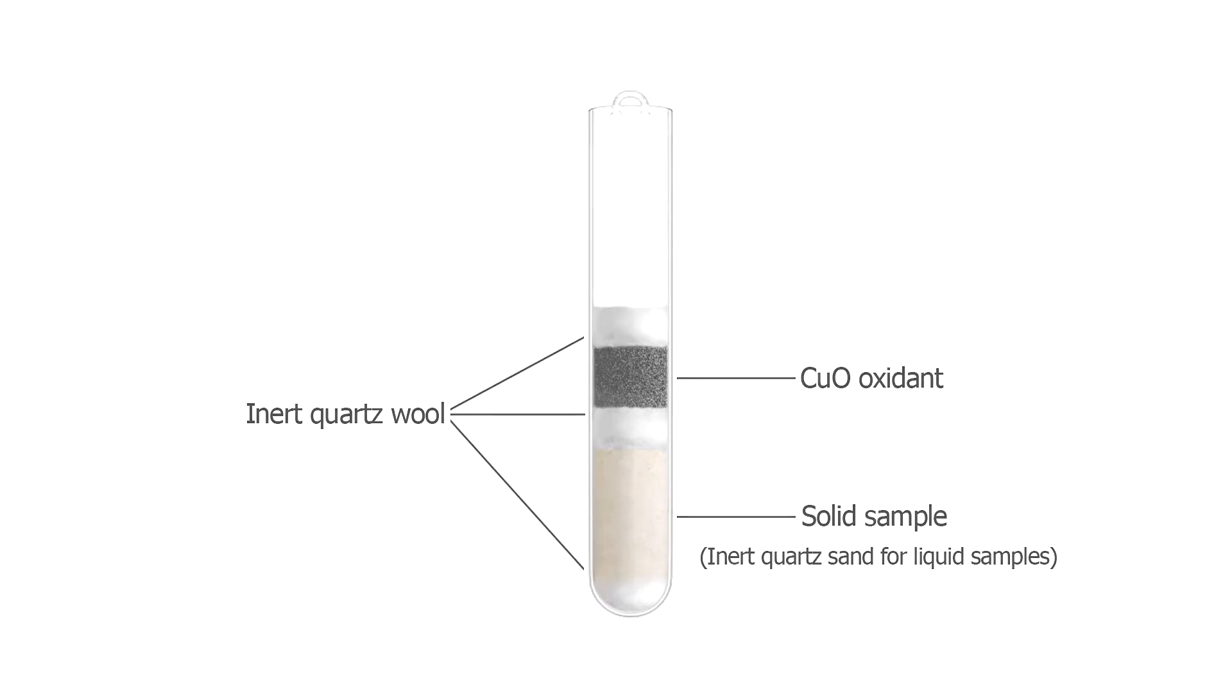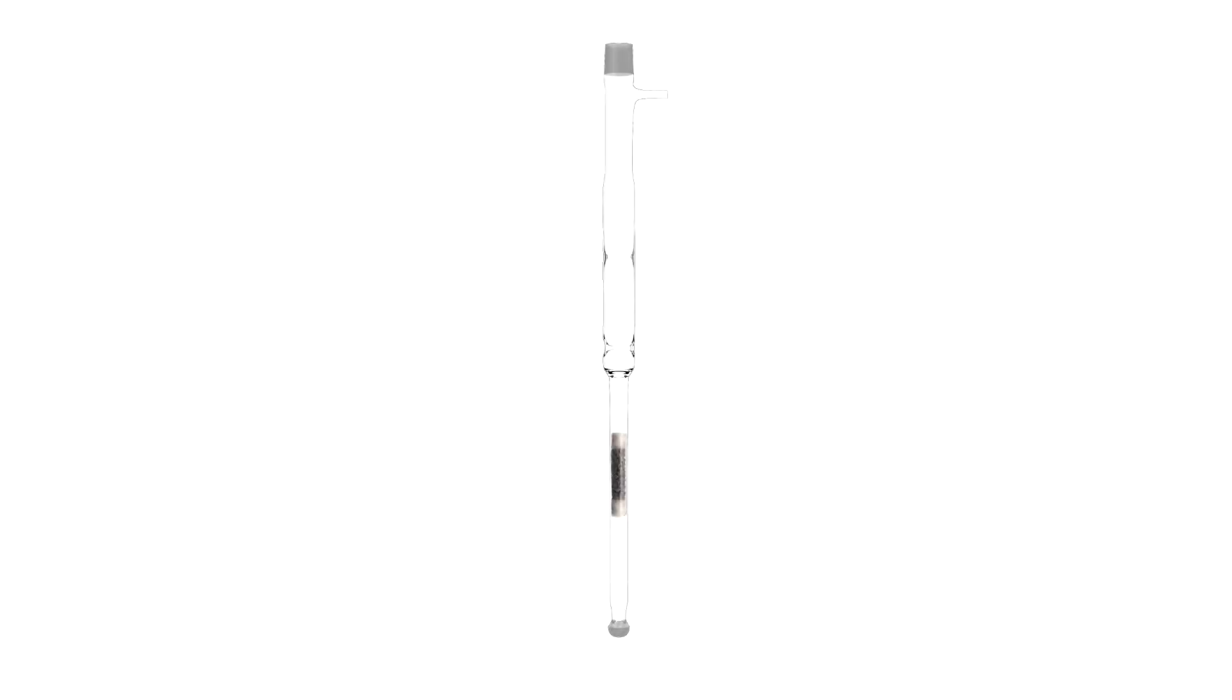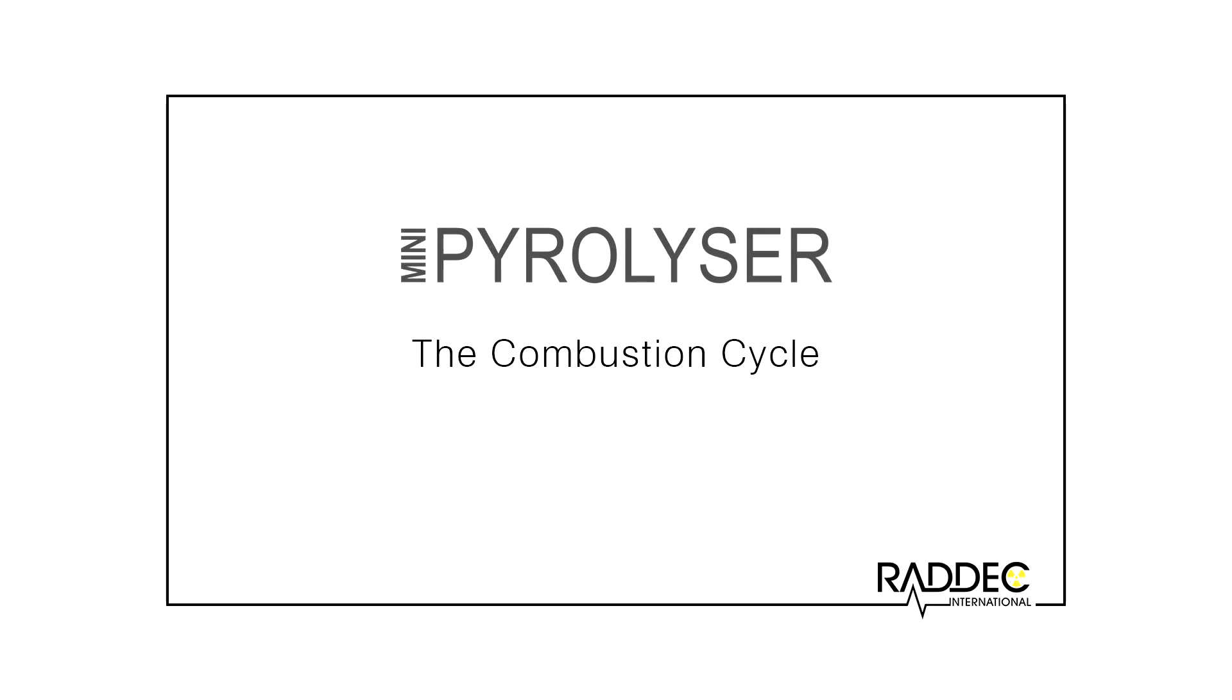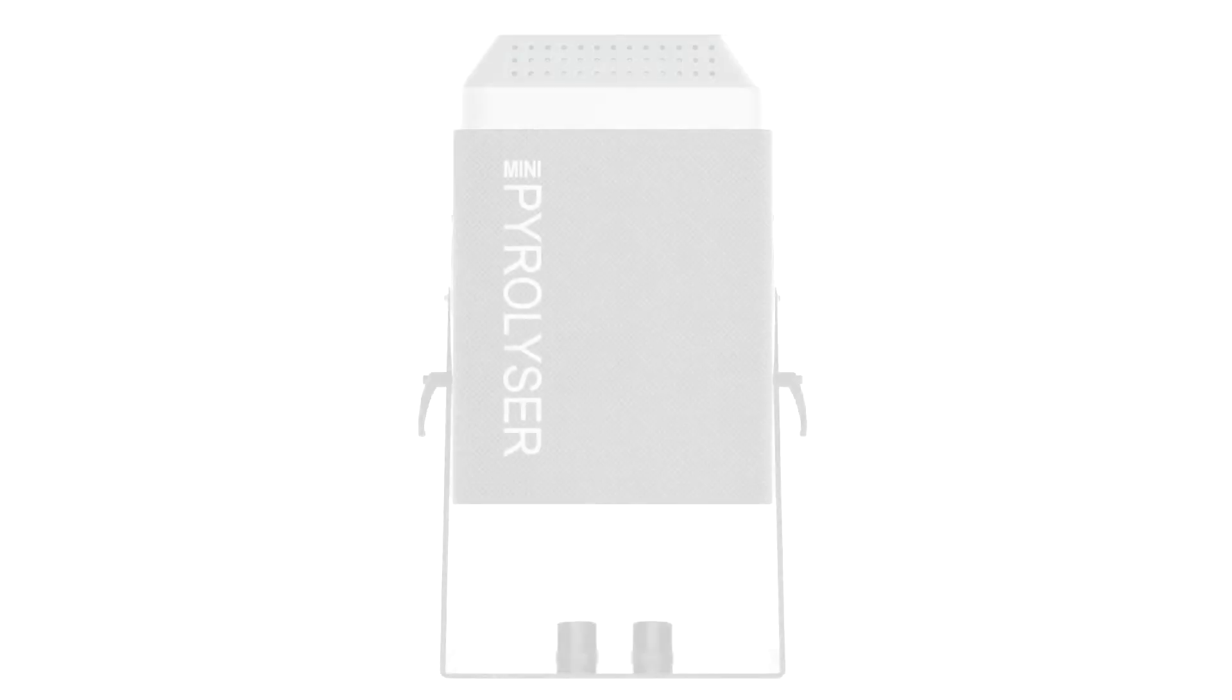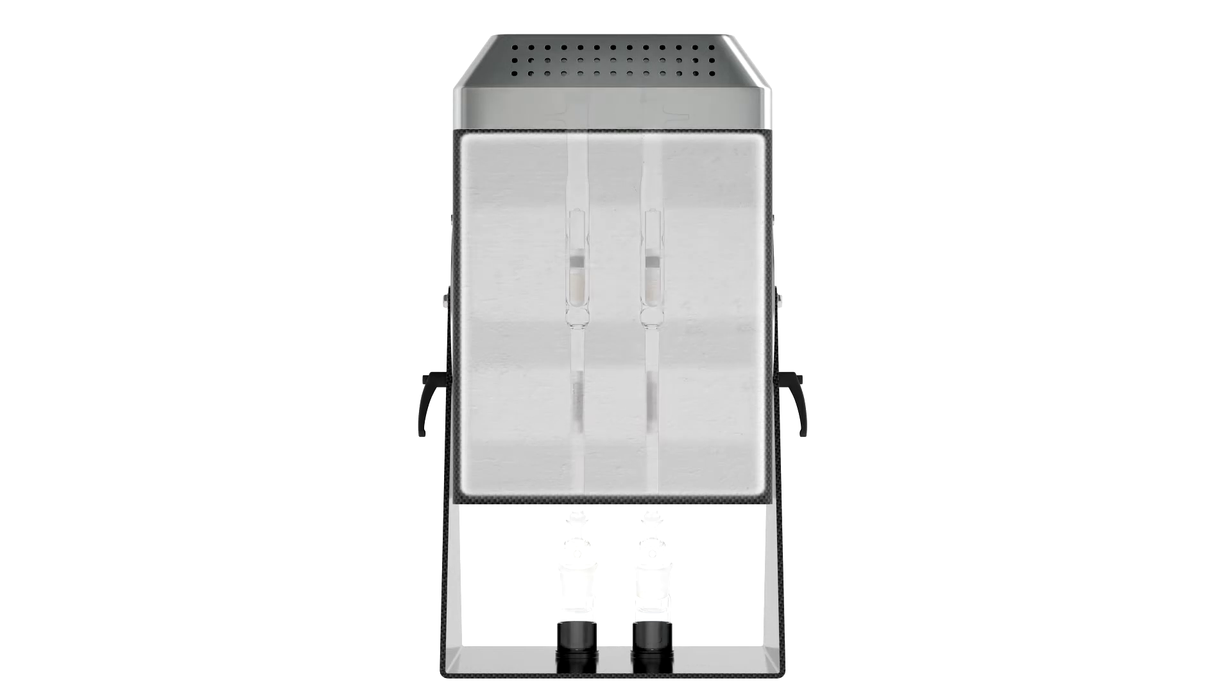The tubular sample holder is loaded through the top of the work tube and lowered onto locating lugs incorporated into the tube. An end cap is then placed on top of the work tube and air is introduced via a sidearm at the top of the work tube. Two samples may be combusted simultaneously with the pyrolyser mini system.